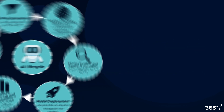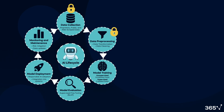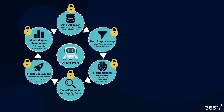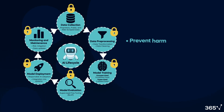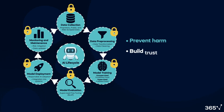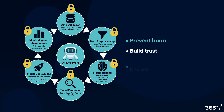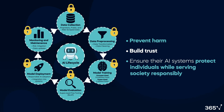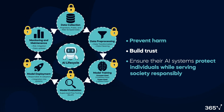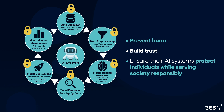By embedding privacy principles into every development phase, companies can prevent harm, build trust, and ensure their AI systems protect individuals while serving society responsibly.